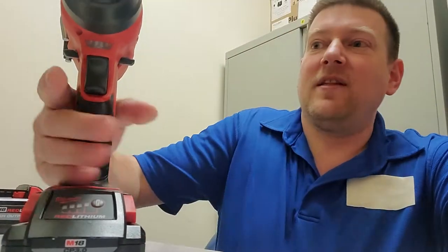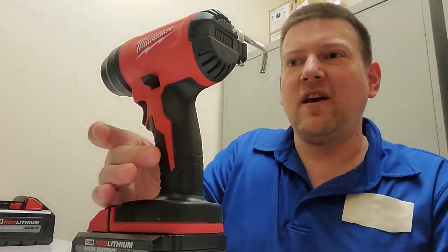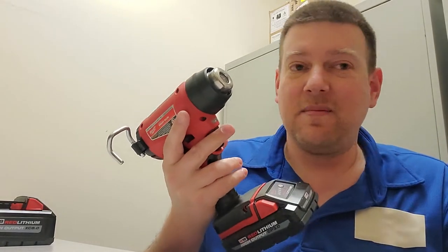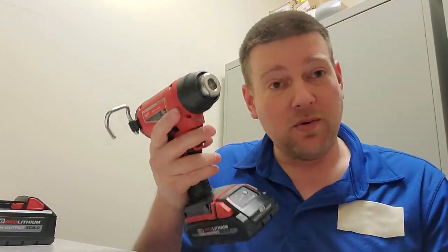So guys, this one right here is the Milwaukee 2688-20. Oh my gosh, this is going to make my life so much better. This is going to go in my roll around tool kit. I'll show you guys how I'm going to organize that later.